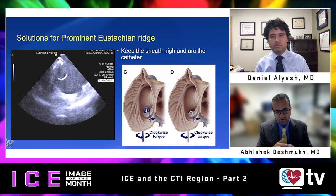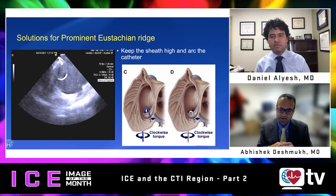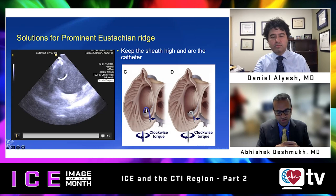When ablating on the cavotricuspid isthmus with a ridge, some pointers would be: when you try to clock the catheter, instead of going septally it goes laterally. And if you try to counter-clock, instead of going laterally the catheter goes more septally. This happens because of the fulcrum effect of the catheter laying on the prominent eustachian ridge.